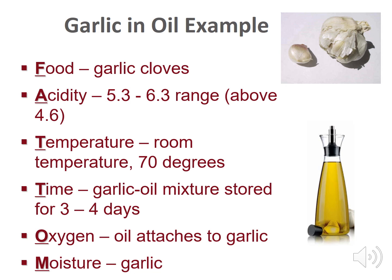For temperature, it's at room temperature, which is 70 degrees — exactly in the temperature danger zone. For time, the garlic oil mixture stored at room temperature for more than 3 days will allow enough Clostridium botulinum to grow, germinate, and produce the deadly toxin. For oxygen, oil attaches to garlic and produces an air-free condition, which is needed for the growth of Clostridium botulinum. For moisture, garlic has available water for Clostridium botulinum to use for growth. Put these conditions all together and we have the perfect conditions for Clostridium botulinum to thrive and survive.